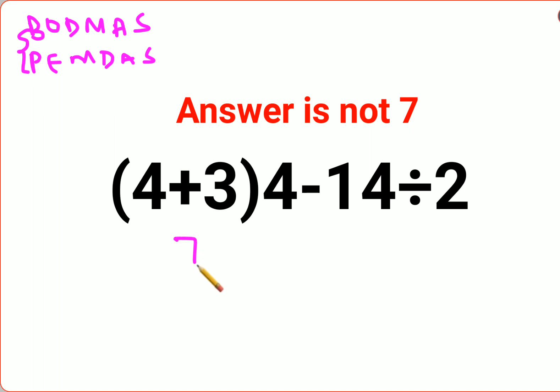So 4 plus 3 that gets you 7 into 4 minus 14 divided by 2. Now a lot of people think that we should do division first, and people think multiplication has to be done first.